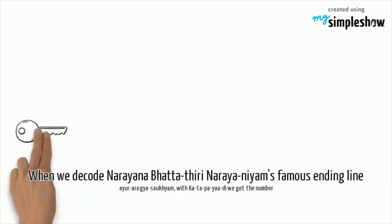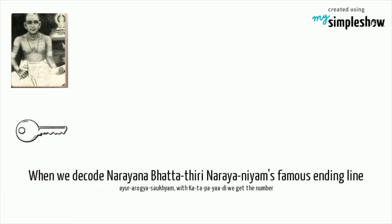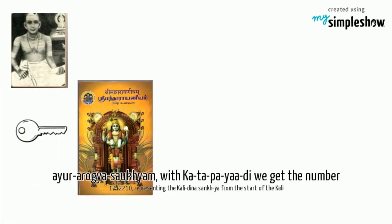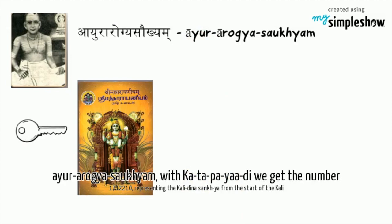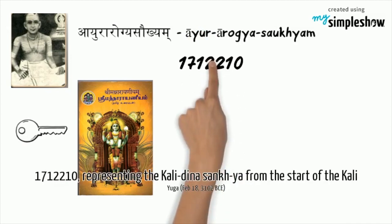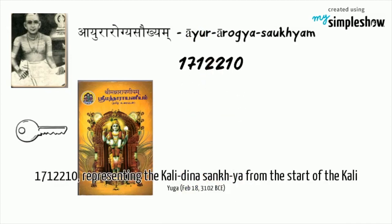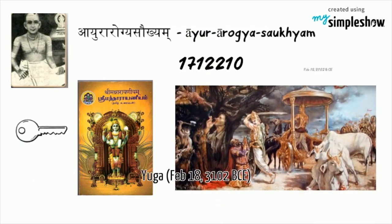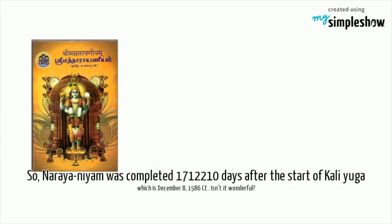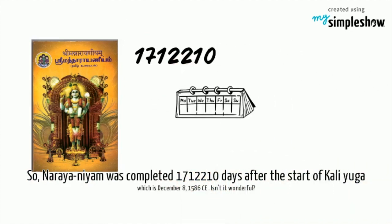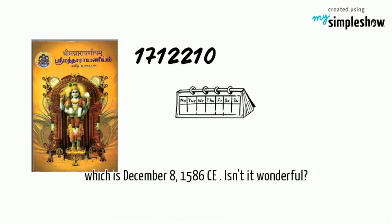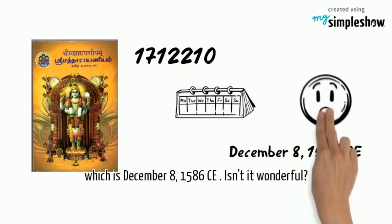When we decode Narayana Bhattatiri's Narayaneeyam's famous ending line 'Ayuraarogya Sowkhyam' with Kata Piyadi, we get the number 1,712,210, representing the Kali Dinasanka — the count of days from the start of Kali Yuga, February 17–18, 3102 BCE. So, Narayaneeyam was completed 1,712,210 days after the start of Kali Yuga, which is December 8, 1586 CE. Isn't it wonderful?